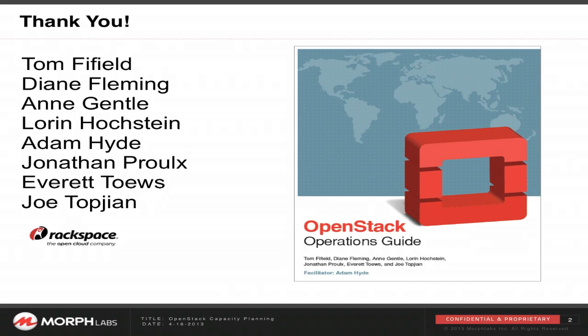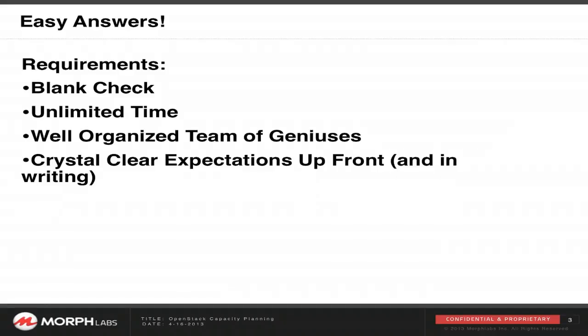I'm guessing you were curious about how to do capacity planning for a big OpenStack environment and were probably looking for easy answers. I've got some really easy answers: start out with a blank check — unlimited funds and unlimited time. Make sure if you're time-boxed by a project manager, tell them that's not going to work. You'll need a lot of really smart people and expectations that never change.